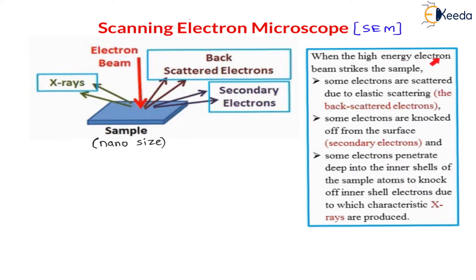Whenever a high energy electron beam strikes on the sample, some electrons are scattered due to elastic scattering — I have already explained electron scattering in the previous lecture. Whenever the electron beam strikes on the particles, there will be electron scattering, and this elastic scattering of electrons is called backscattered electrons. These backscattered electrons travel back in this direction.